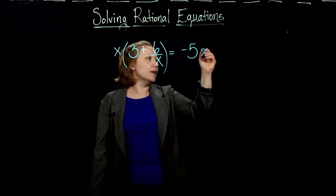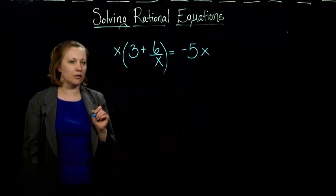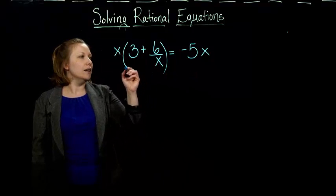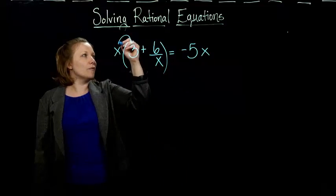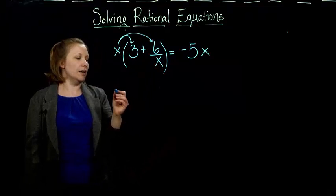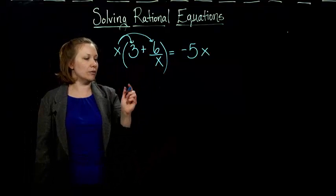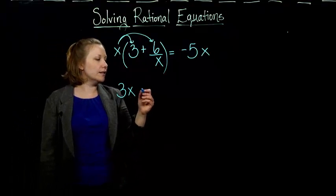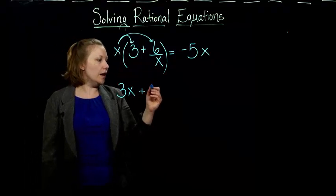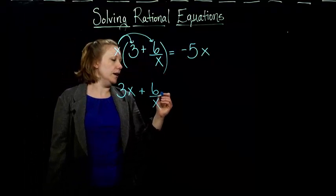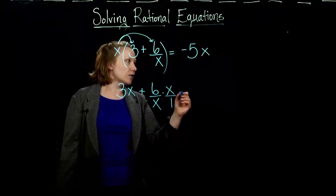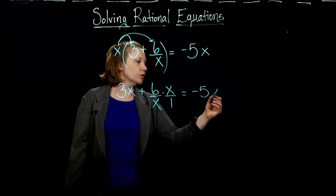And so I do the same thing over here, multiply x on the other side, to keep my equation balanced. Can't forget that. And so again, we use the distributive property. And we get x times 3, which is the same thing as 3 times x. I'm going to write 3x, because it looks a little more conventional. And then I get 6 over x times x. You can write it as x over 1, if that's helpful to you.